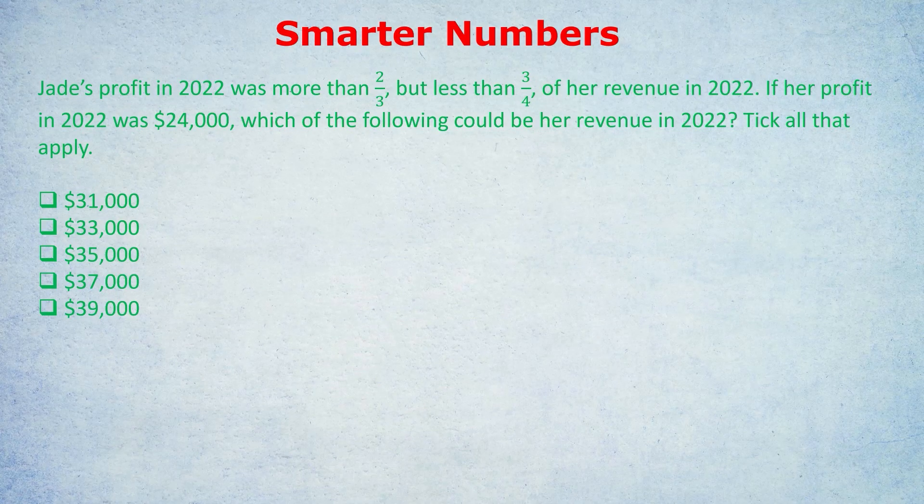If there was ever a trick that could quickly boost your quant score in the GRE or the GMAT, it would be this: how to pick smarter numbers. I want to demonstrate how picking the boundary of a set of values can be just the right idea — the smartest type of number to get a range of questions correct. Let me try and demonstrate with this question.